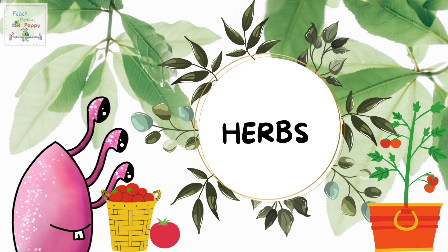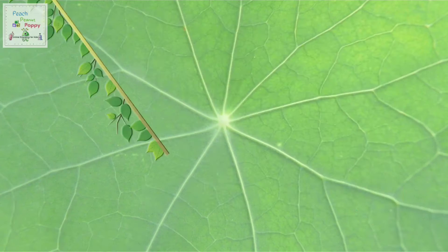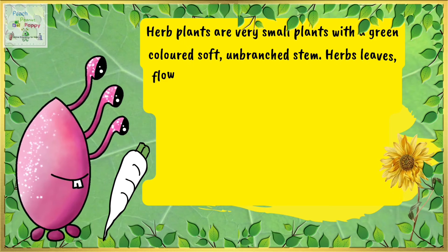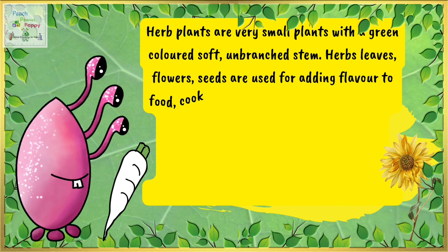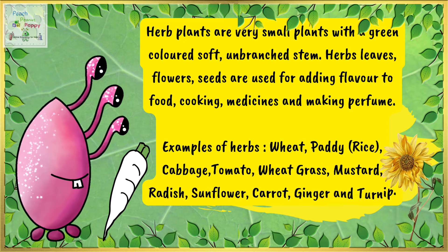Moving on to the next one on the list: herbs. Herb plants are very small plants with a green colored soft unbranched stem. Herb leaves, flowers, and seeds are used for adding flavor to food, cooking, medicines, and making perfume.